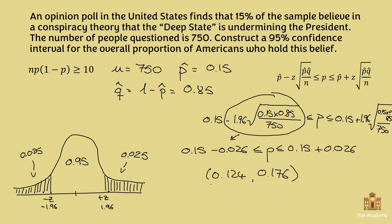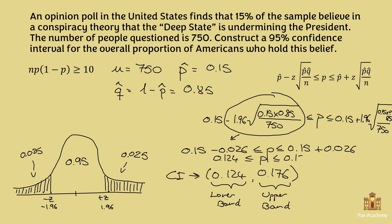So this is our confidence interval: (0.124, 0.176), where 0.124 is the lower bound and 0.176 is the upper bound. When writing a confidence interval, it is written with the lower bound value, comma, and upper bound value. What this result means is that we can say with a 95% confidence level that the overall proportion of Americans who hold this belief is between these two values. That's it for this exercise — let me know in the comments if there are any questions.